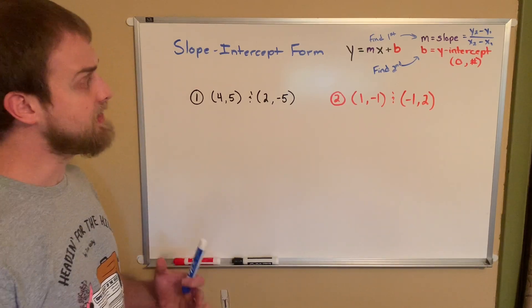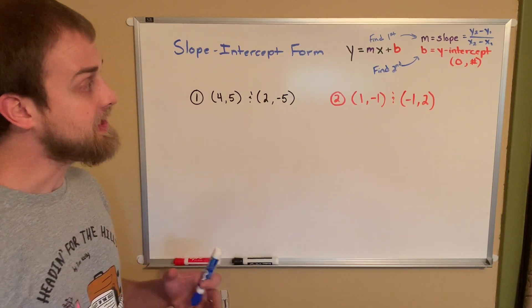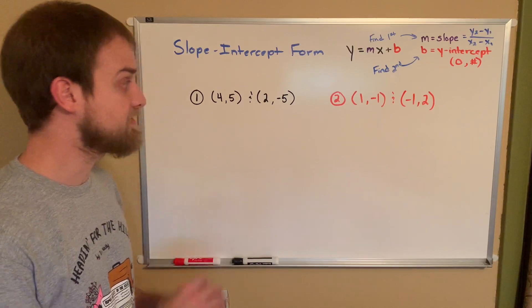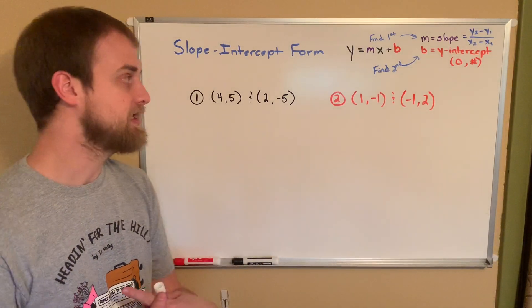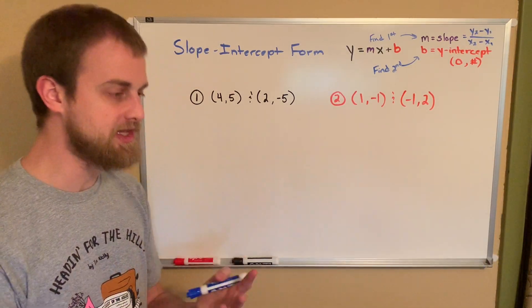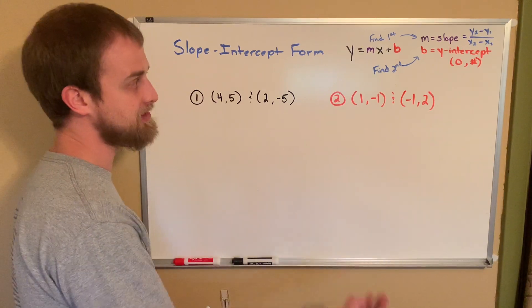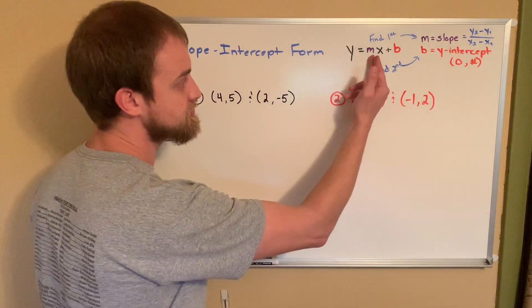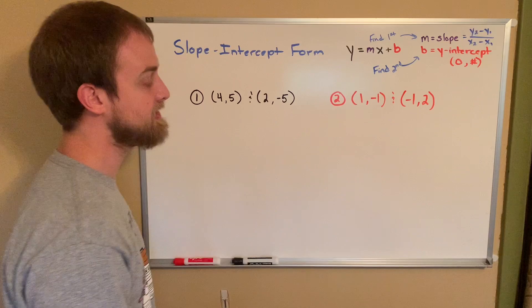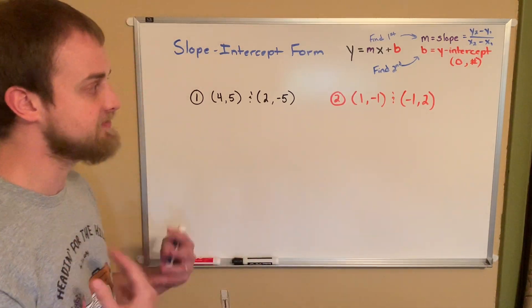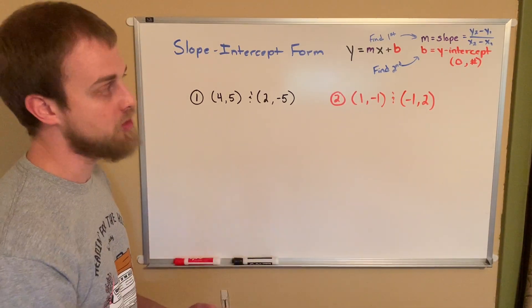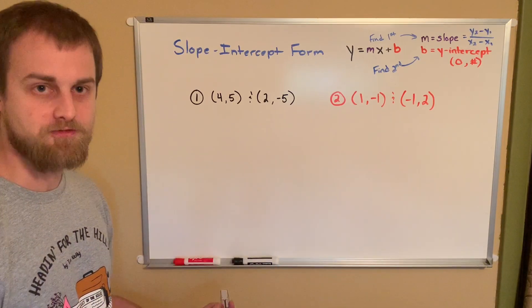Hi guys, I'm Mr. Starry again. Today I want to talk about writing slope-intercept form equations given two ordered pairs. Think about it. What two things do we need to make a slope-intercept form equation? Well, we need the slope and we need the y-intercept.